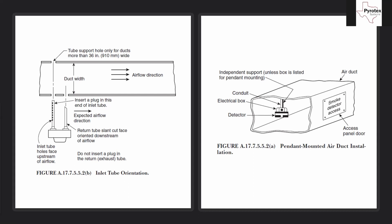Looking at the diagram, air flows in one direction and the sampling tube has perforated holes — if you've ever installed a duct detector you'll recognize them. Those holes must face into the airflow so air blows into the sampling tube. But the sampling tube alone wouldn't work — there's also an exhaust tube with a slanted end. You must orient that slant with the high side facing the incoming airflow and the low side facing downstream, because as air passes over it, it creates a venturi effect — generating a vacuum.